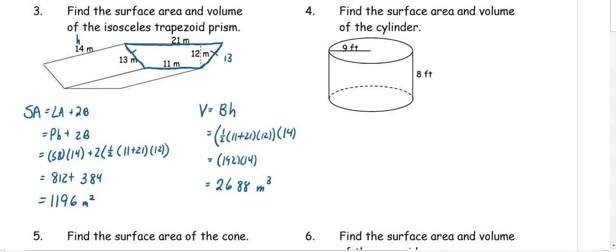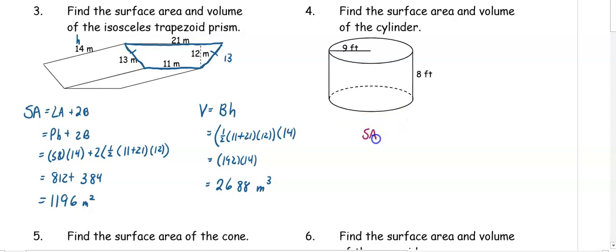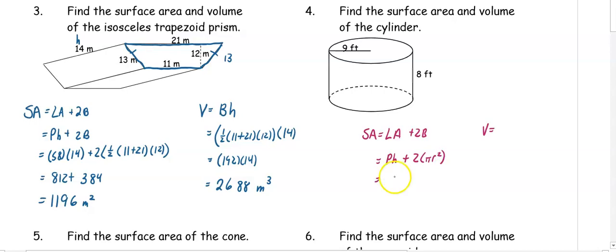In number five, we want to find the surface area and the volume of a cylinder. The surface area and the volume use the same equations as with the prism. The surface area is lateral area plus two bases. Your lateral area is perimeter times height, plus the area of two bases, which is pi r squared. Remember, in a circle, your perimeter is your circumference. So we have 2 pi times 9 times the height of 8, plus 2 pi times 9 squared.